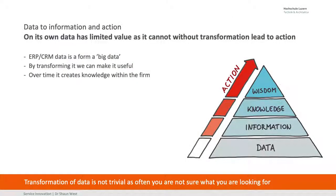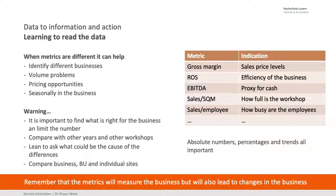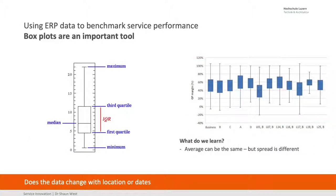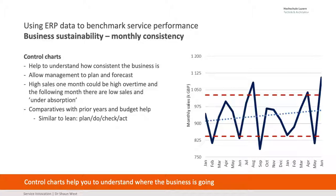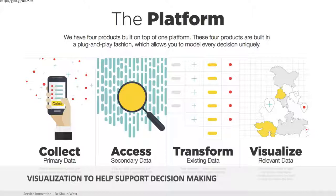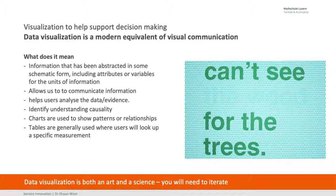Data to information — the final section. We need to be able to convert the data we have. What's the indication, what does the metric tell us, and what's the lever underneath it? Box plots are great — understand how to use them. Control charts are also excellent — understand how to put them together. These visualization tools help us support decision making. Visualization, not just the numbers. My graphics were quite visual in terms of dashboards and displays. It takes time to get it right, and it's both an art and a science. You'll need to iterate to find out what helps you make the right decisions.